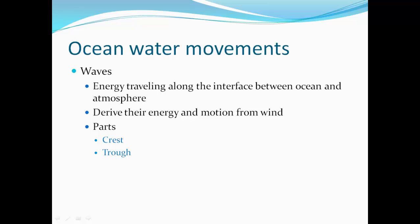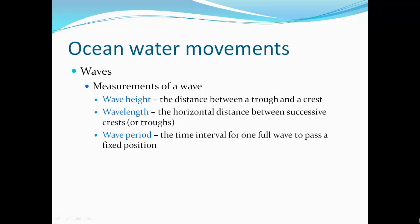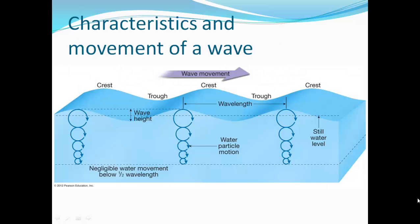Waves are traveling energy along the interface between ocean and atmosphere; they derive their energy and motion from wind. Parts of the wave: the crest is the peak of a wave; troughs are the low points. Wave height is the distance between a trough and a crest — the amplitude of the wave. Wavelength is the horizontal distance between successive crests or troughs. Wave period is the time interval for one full wave to pass a fixed position.